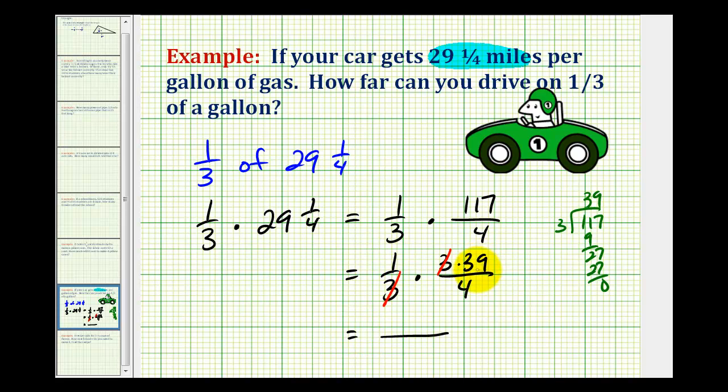we have one times 39, that's 39, and we have four in our denominator. So this represents the number of miles that we can drive on one-third of a gallon. But let's go ahead and convert this to a mixed number.